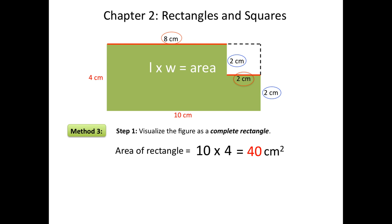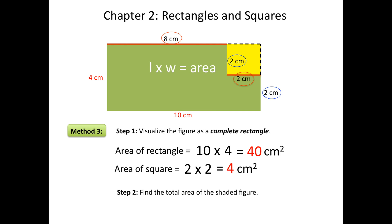The area of 40 centimeters squared currently includes the white square in the upper right-hand corner of this figure. We want to take that part away so we're left with just the shaded area, so we have to find the area of the square. The area of the square can be found by multiplying the length times the width, so the area of the square is 4 centimeters squared. Now we can move on to step 2 and find the total area of the shaded figure. 40 centimeters squared, which is the area of the rectangle, minus 4 centimeters squared, which is the area of the square, equals 36 centimeters squared.